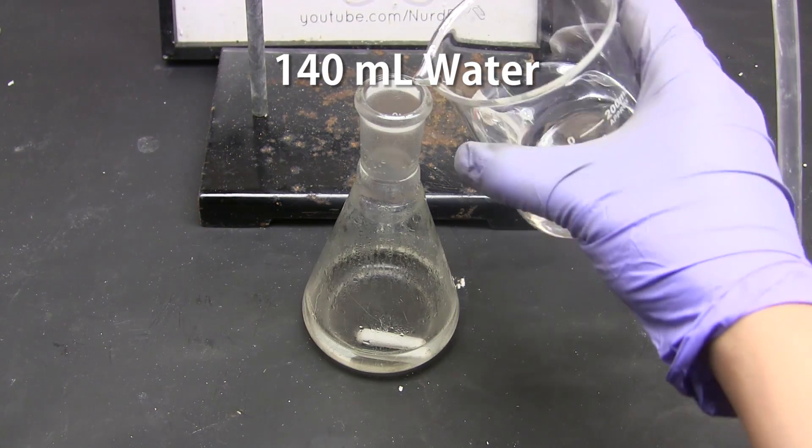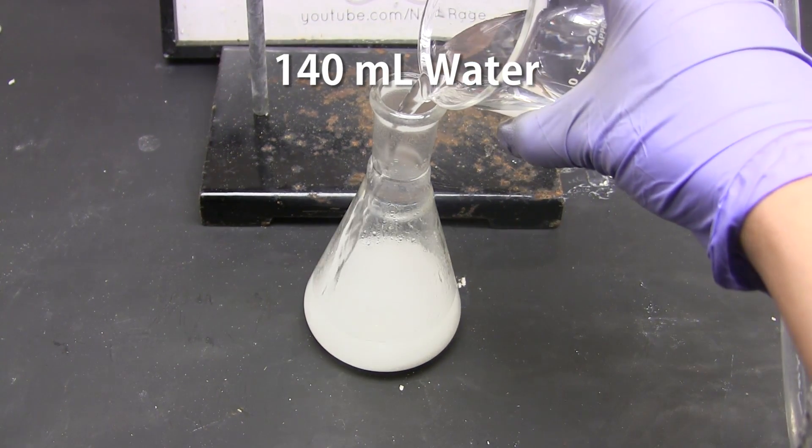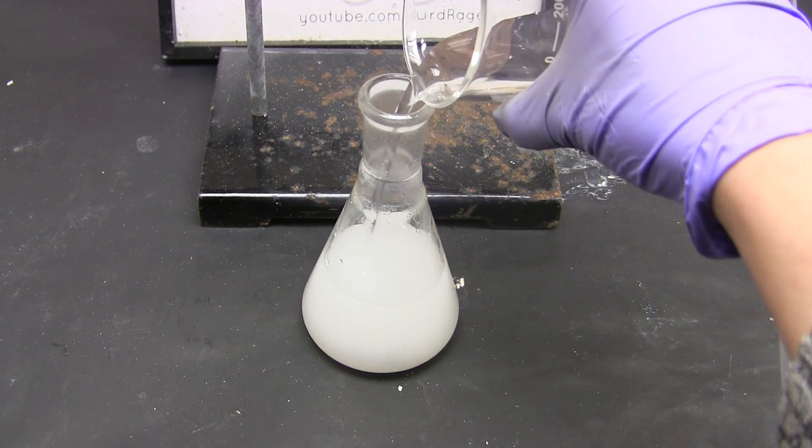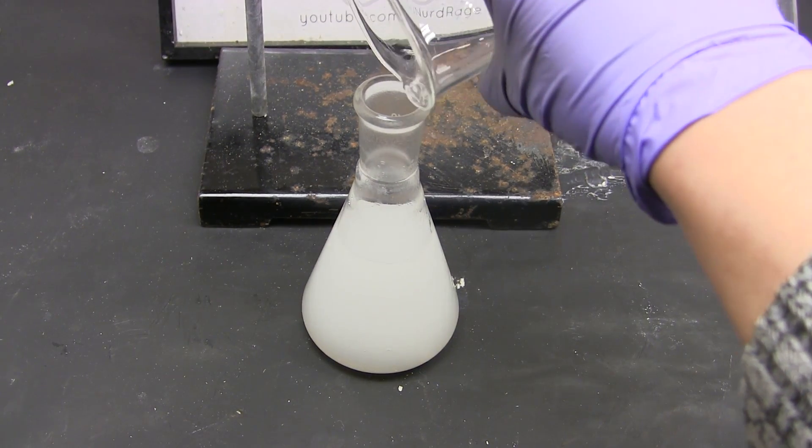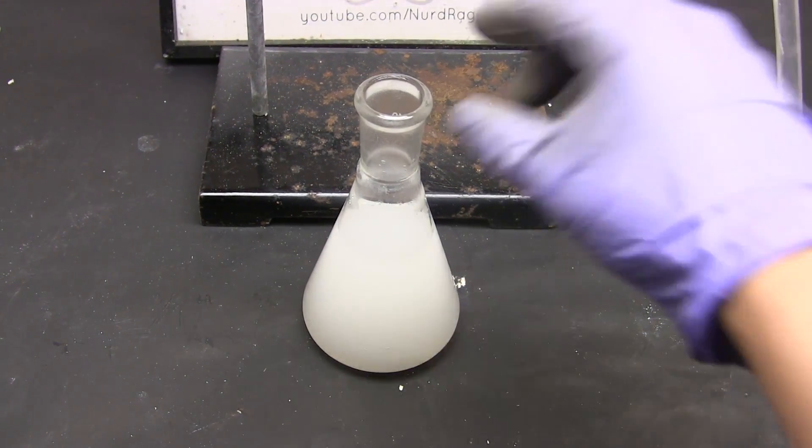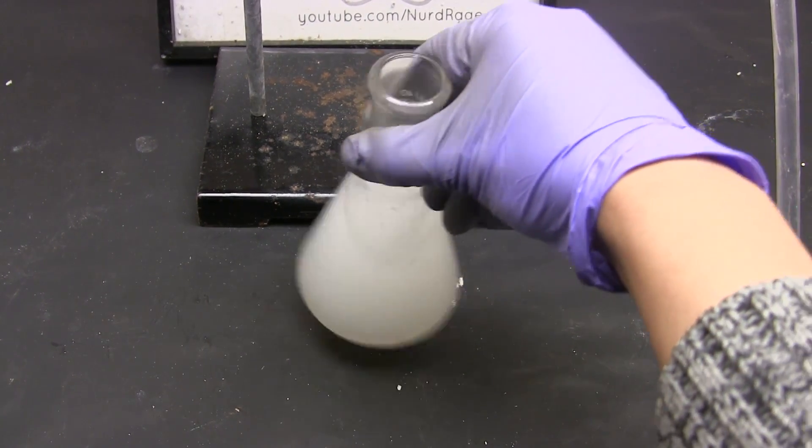Now we add 140 mL of cold water. The propionic acid, sulfuric acid and ethanol are all very soluble in water. But the ethylpropionate has very low solubility and conveniently has a lower density than water.